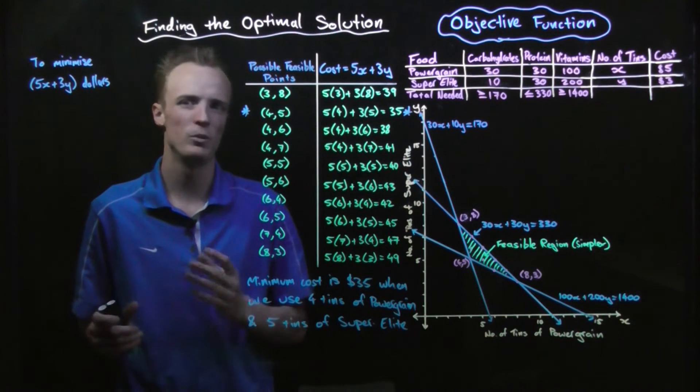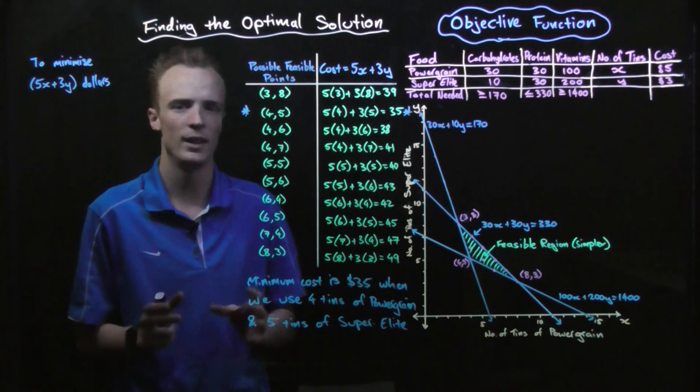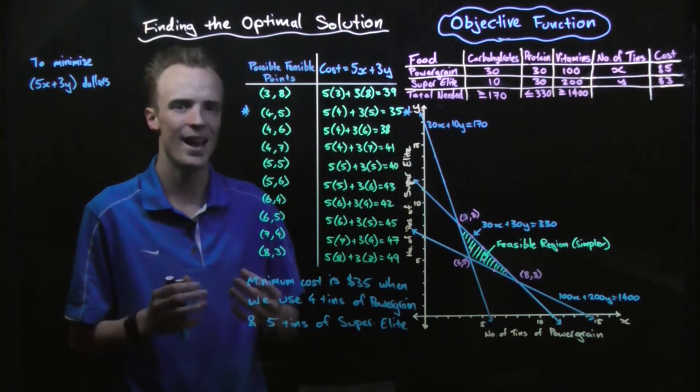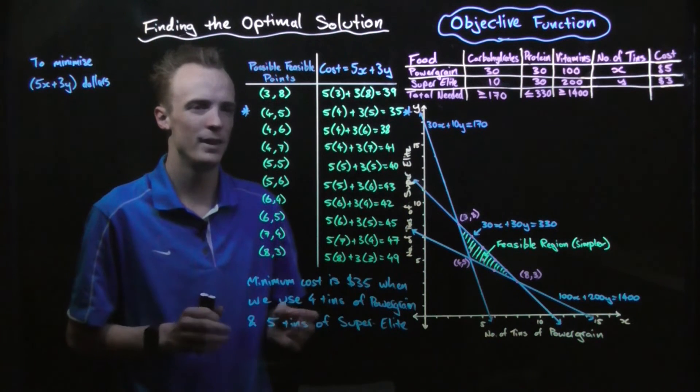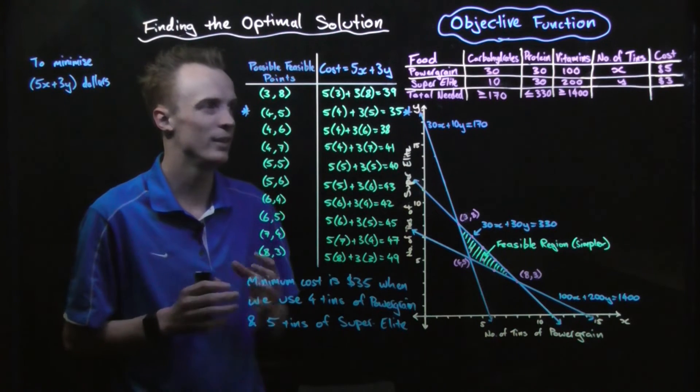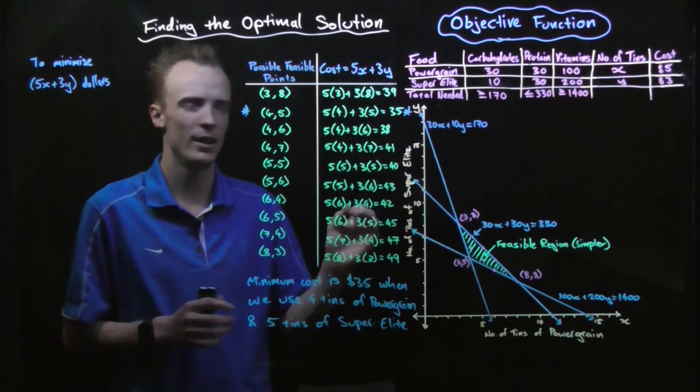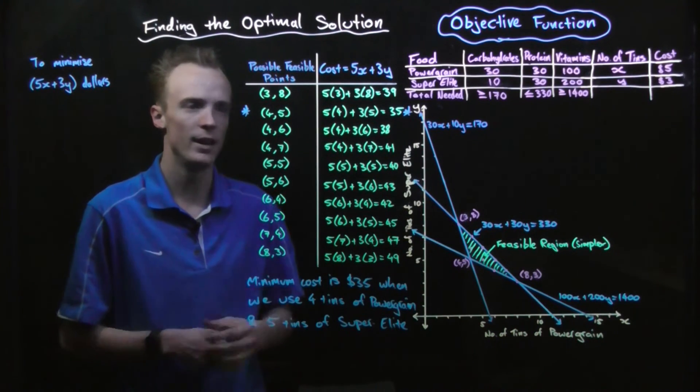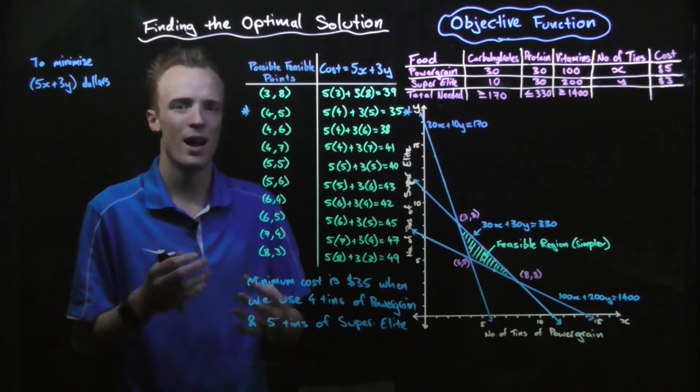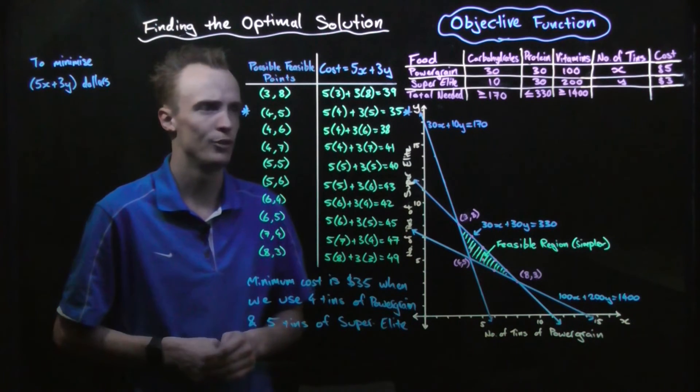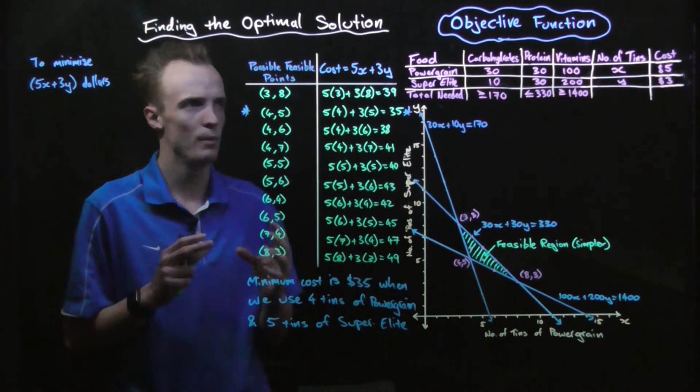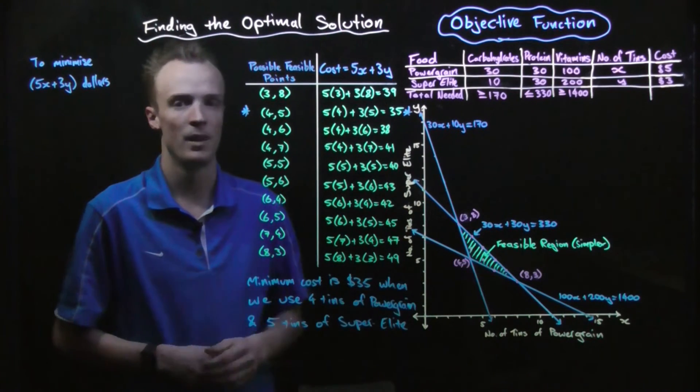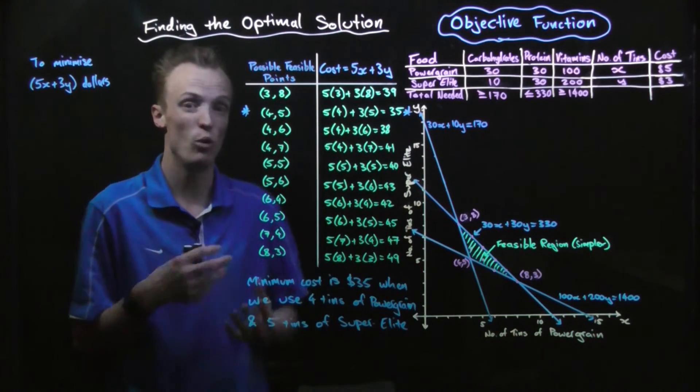When we're actually trying to find optimal solutions when we're dealing with linear functions, those optimal solutions will always occur at a vertex. Now, there are some assumptions that I'm taking with this, particularly because I'm dealing with a discrete only problem. What's important to understand is when we're dealing with linear functions, the optimal solution does actually occur at a vertex, whether it be a maximum solution or a minimum solution.